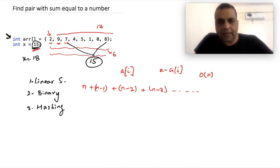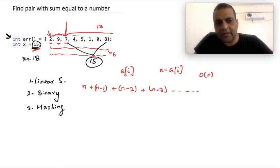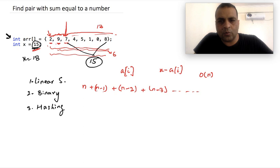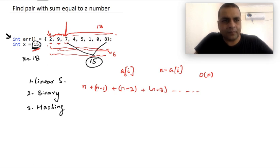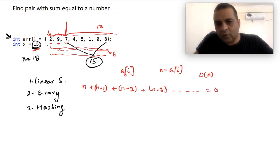The reason the search time decreases is that when we are at a particular element, we don't need to search the array before it — only after it. For the second element, we don't need to check the first element because had that pair been the answer it would have been found earlier. In this case the total time taken is on the order of n squared.